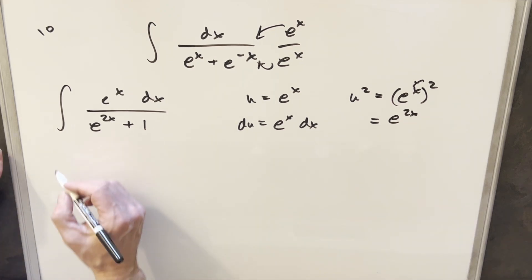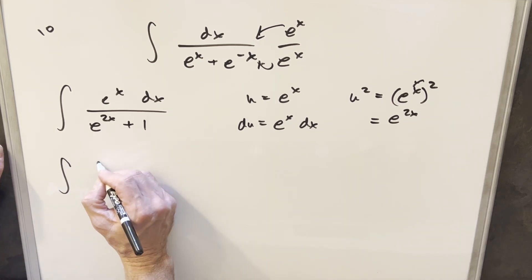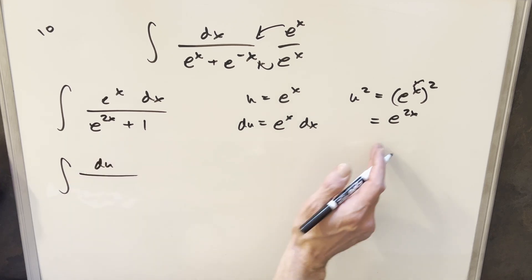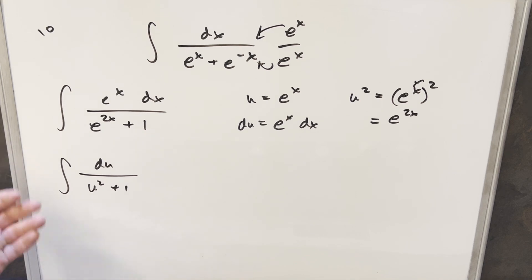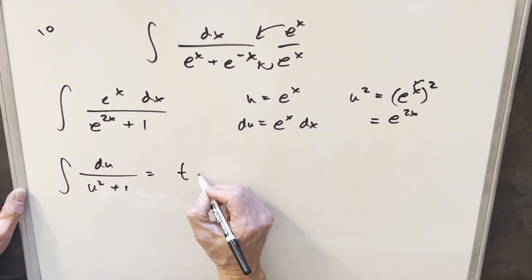So now we'll just go ahead with this substitution. So we'll have our du in the numerator, and then this here is going to be our u squared plus 1. But now we have our integral in the form for arctan. So this is actually just going to be arctan of u.